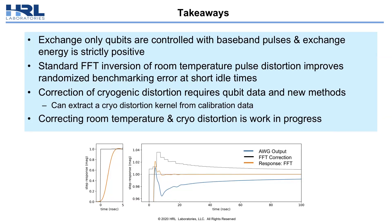Takeaways from this talk: exchange-only qubits are controlled with baseband pulses, and exchange energy is strictly positive. A standard FFT inversion of room temperature pulse distortion improves randomized benchmarking error at short idle times. We can correct for cryogenic distortion, but it requires qubit data and new methods — specifically, we extract it using calibration data. Correcting for both room temperature and cryo-distortion remains a work in progress.